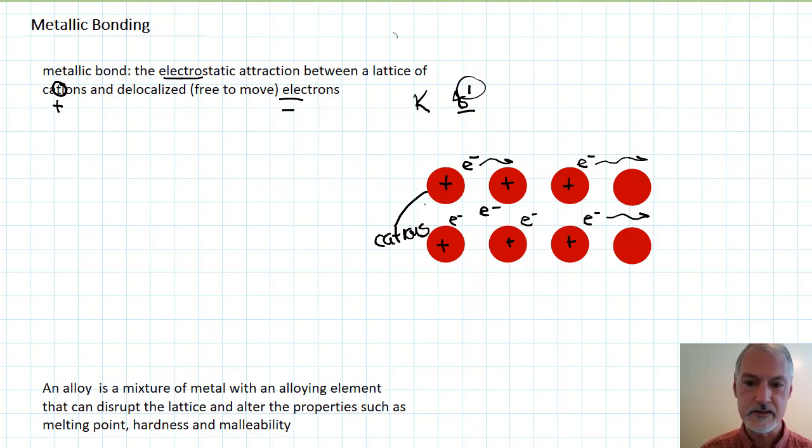There are a few other features of this particular arrangement. One is that when subject to stress, for instance, as we draw out a metal—we call it ductility—these can slide to the left and to the right over each other,